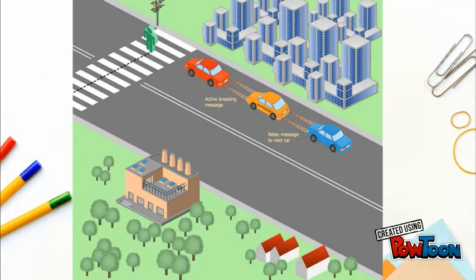This is one more scenario in which three cars are moving one behind the other. The first car is in a blind spot to the third car because of the car in between them. So any action by the first car, let us say sudden braking, cannot be seen by the third car and might result in a crash.